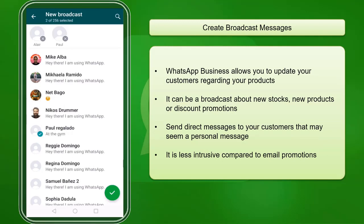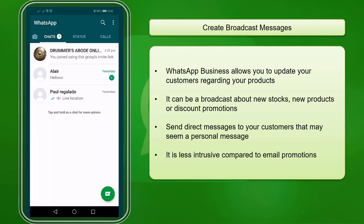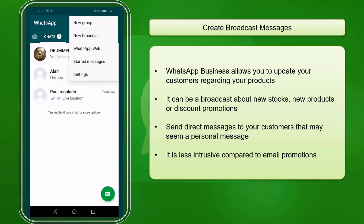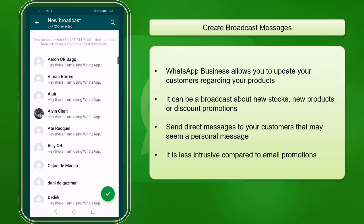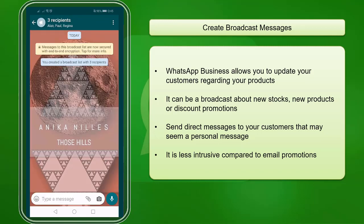Next, create broadcast messages. WhatsApp Business allows you to update your customers about your products. You can send one message to multiple customers and they can receive it individually, making it seem like a personal message, which is less intrusive compared to sending mass email promotions. To send a broadcast message, tap on the three dots and click on the New Broadcast option. Select the contacts to receive your broadcast message — the minimum is two contacts. Now you have successfully created a new broadcast list and can start creating the broadcast message to send to the people inside this list.